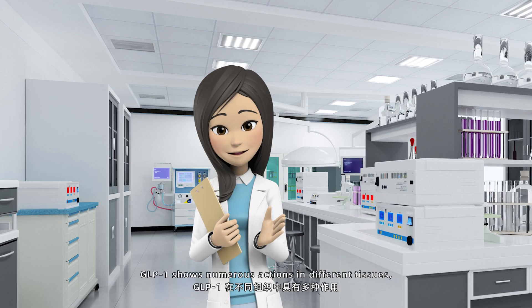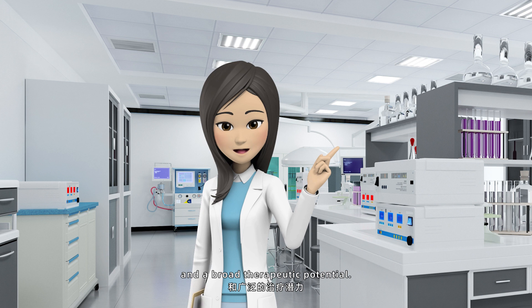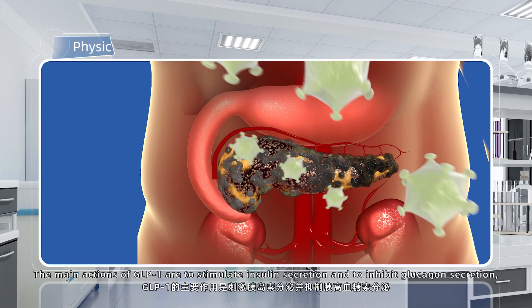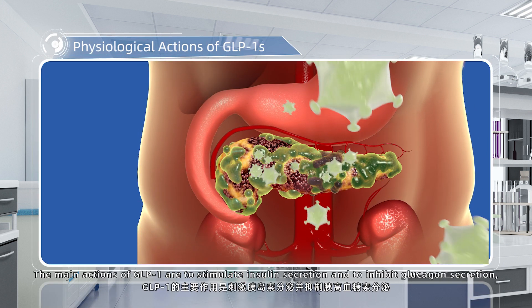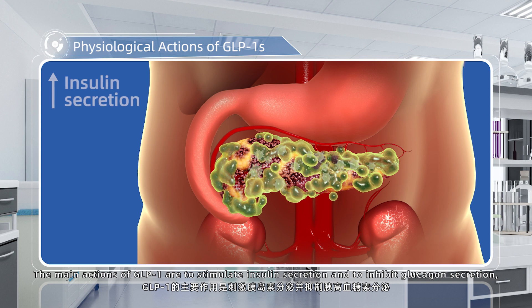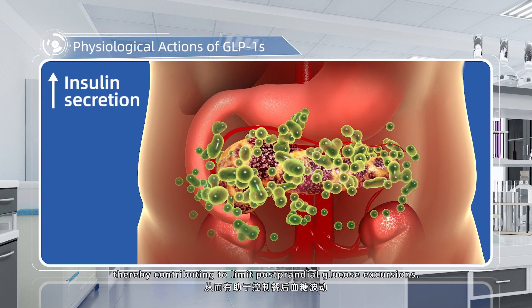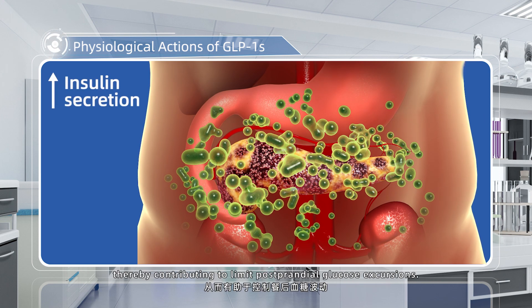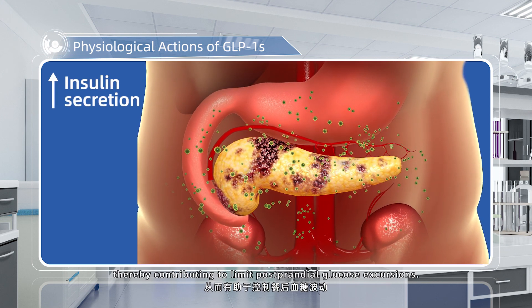GLP-1 shows numerous actions in different tissues and a broad therapeutic potential. The main actions of GLP-1 are to stimulate insulin secretion and to inhibit glucagon secretion, thereby contributing to limit postprandial glucose excursions.